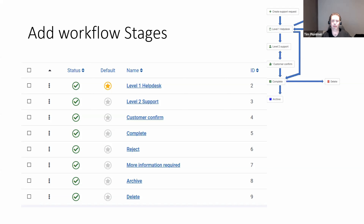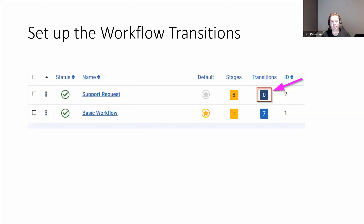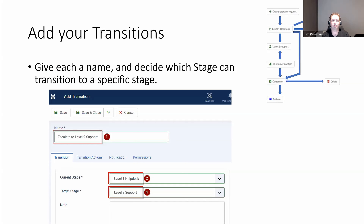I'm going to go ahead and create all the states for the workflow. We've got Level One Help Desk, Level Two Support, Customer Confirm, and all the different states that we're trying to go back and forth with, including Archive and Delete. You can call these whatever you like. Now that we've created our stages, the number has increased to eight. The next thing is to go into transitions — there are no transitions yet, so we click on zero and start creating.